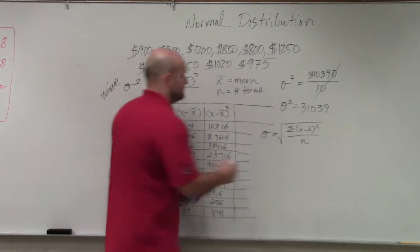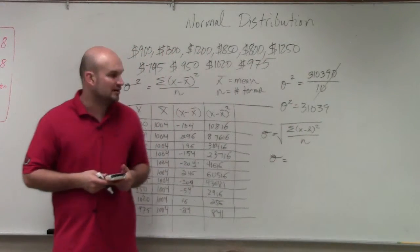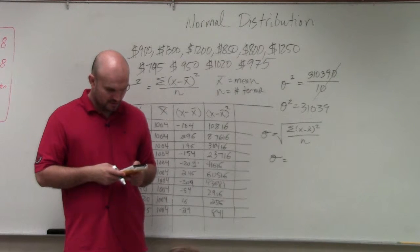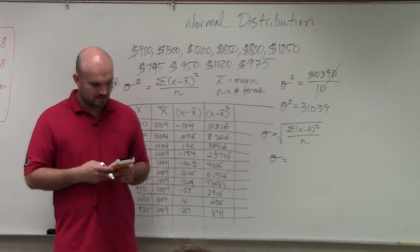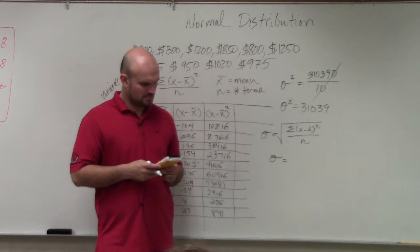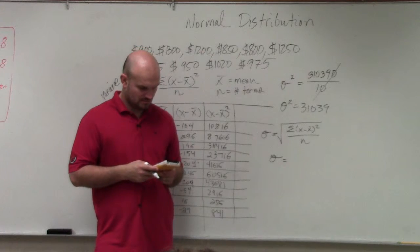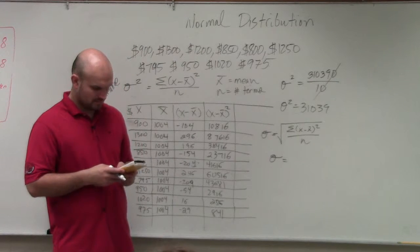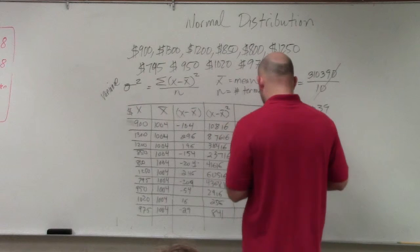So now, all I need to do then to find my standard deviation is I just need to take the square root of my variance. So I just do square root of, I'm getting 557. I don't know what I, why that didn't show up. That's weird.